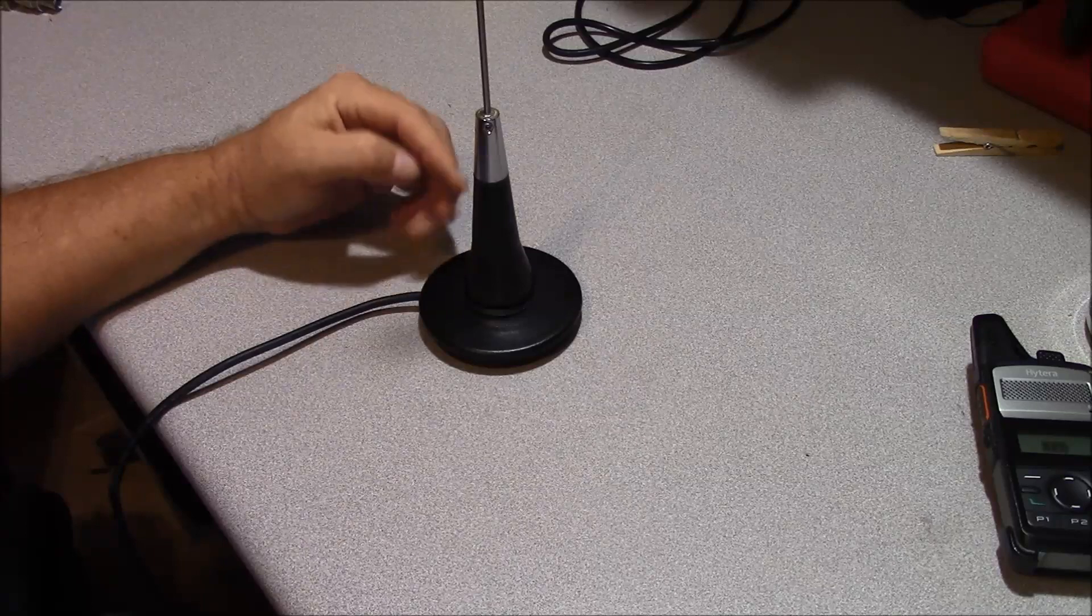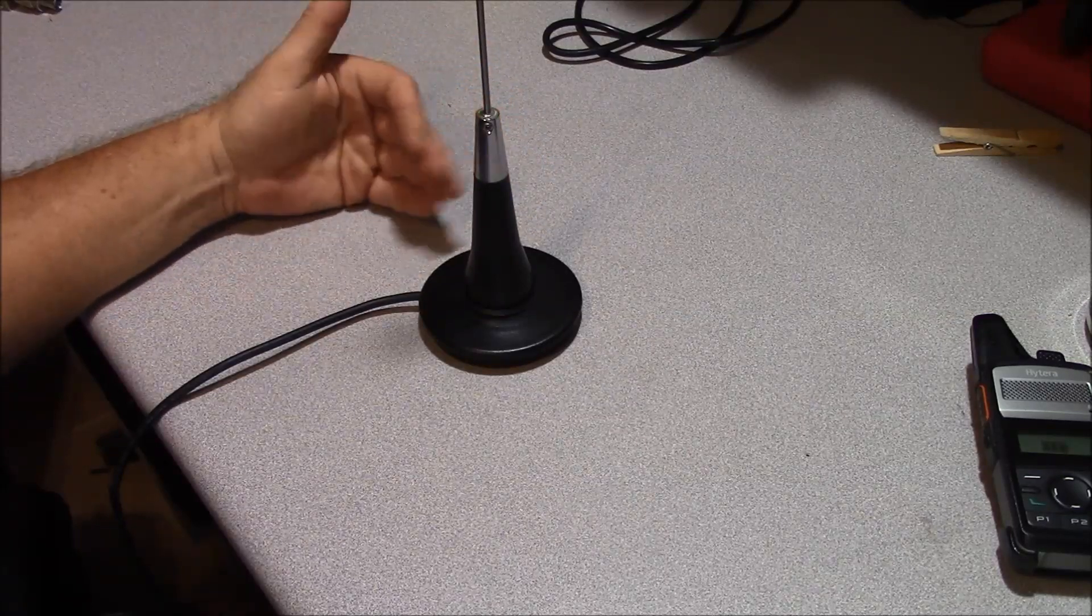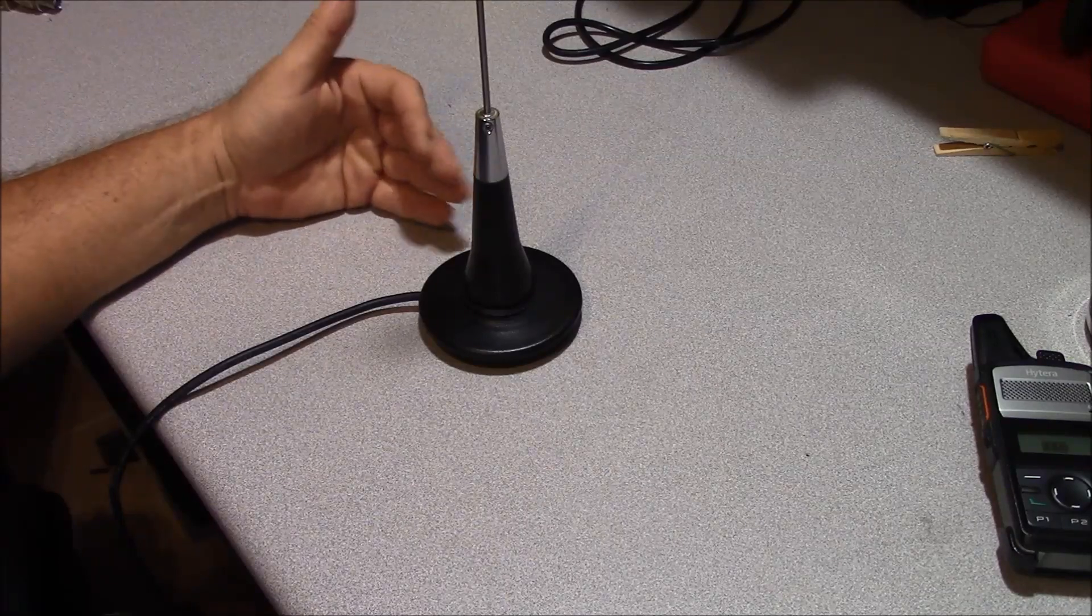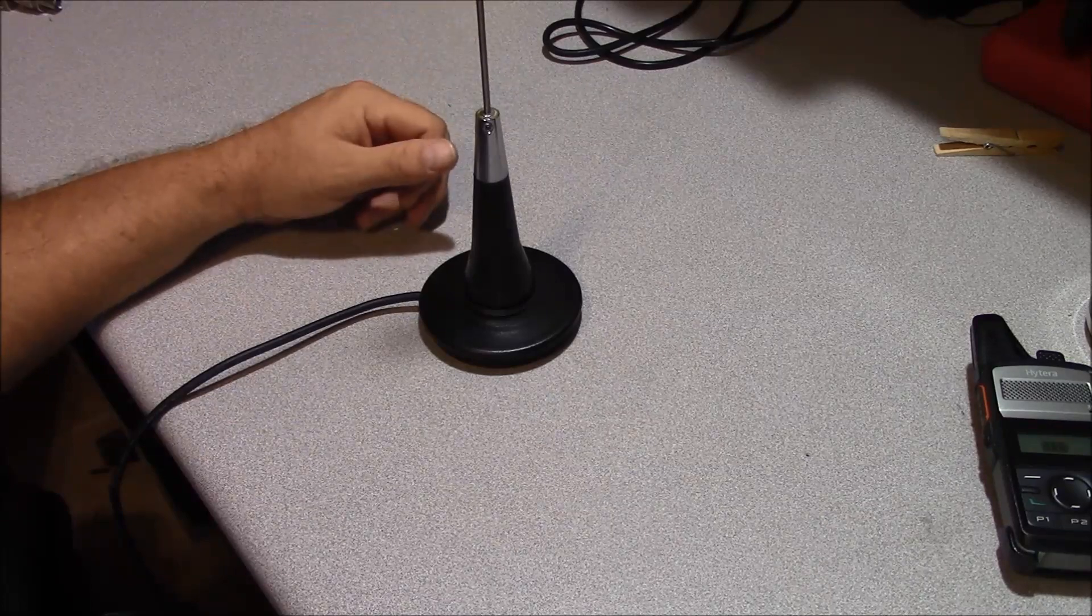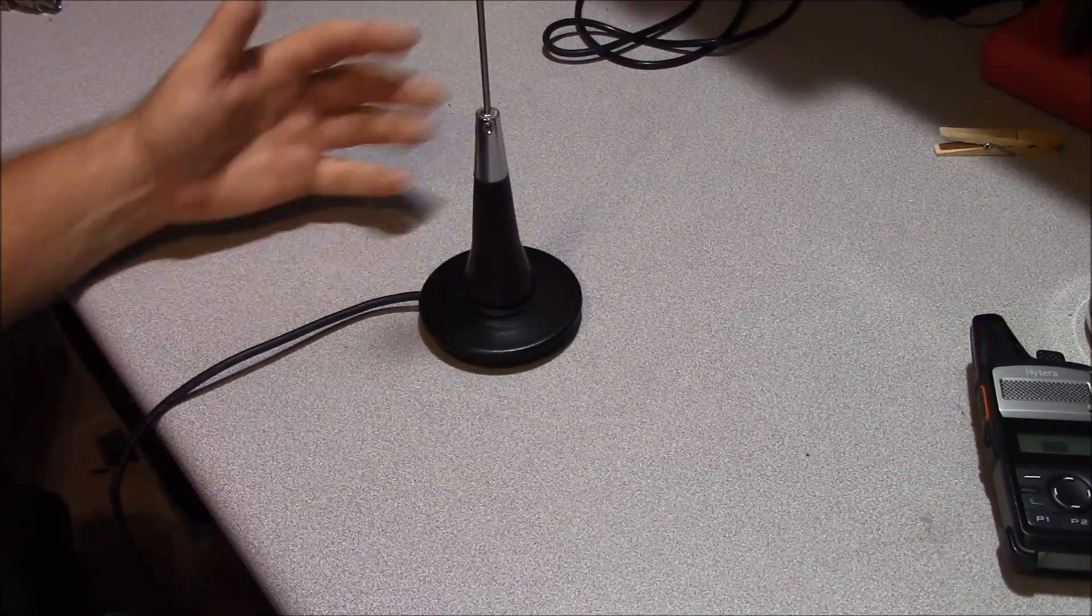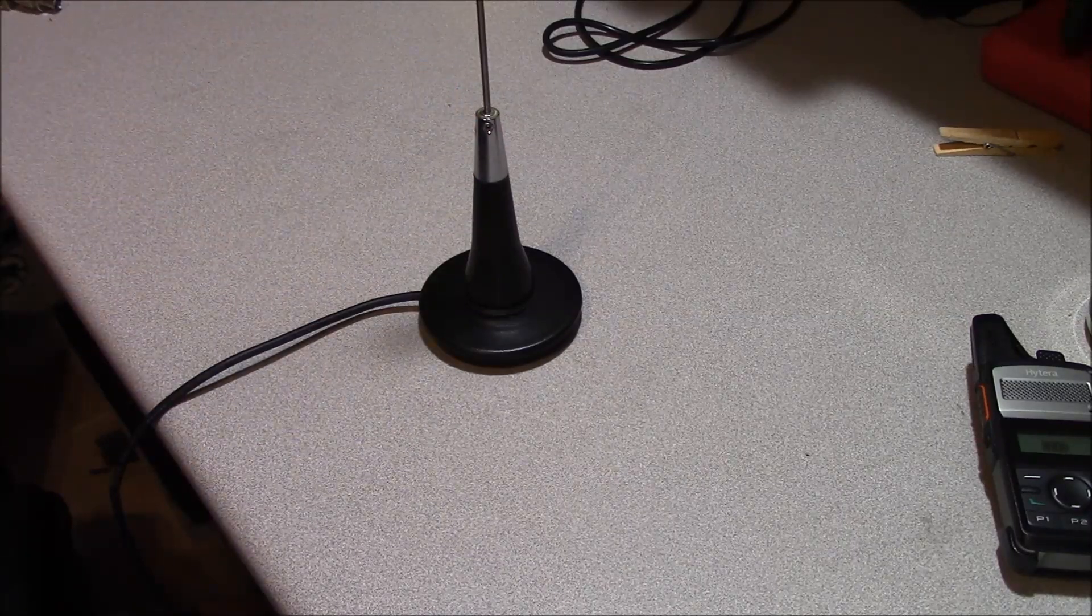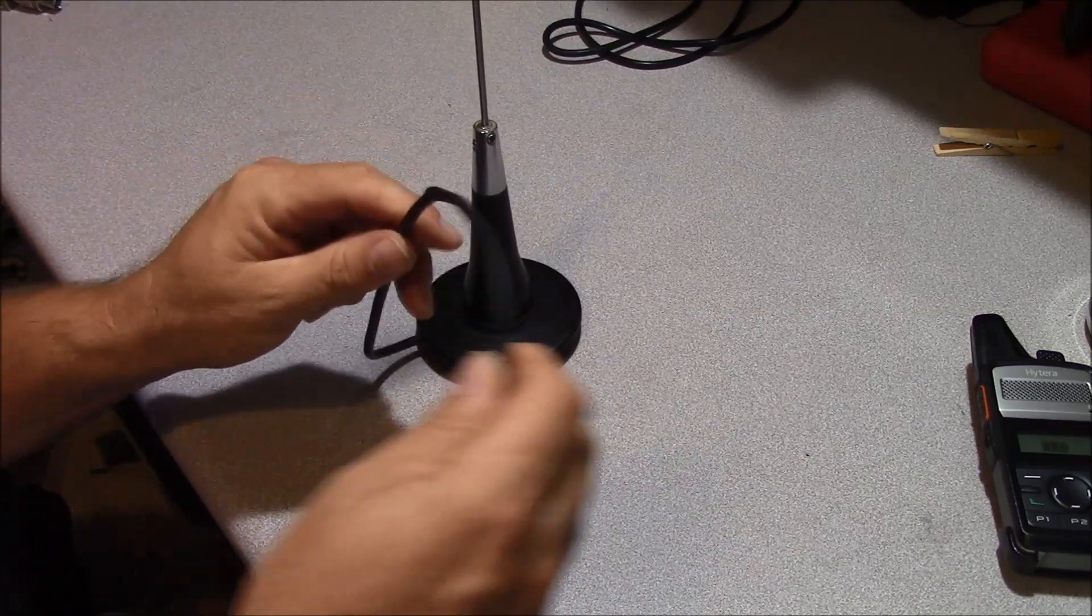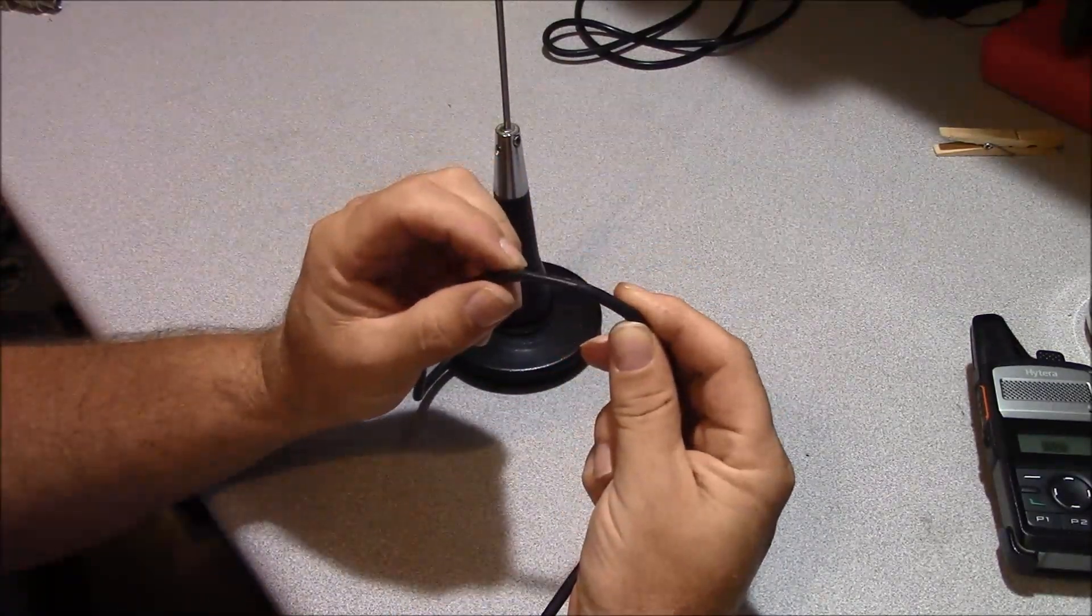Magnetic base antennas are very popular in radio caches because it's very simple to issue a radio with a magnetic base antenna to an individual. They can put the thing in their vehicle and go down the road, but oftentimes when they come back, the antenna cable may be damaged from opening and closing a door or whatever have you.